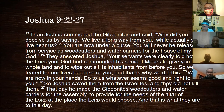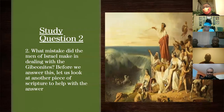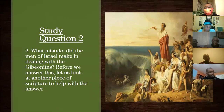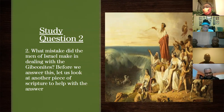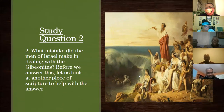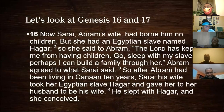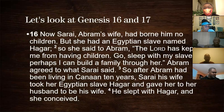This leads us to study question two: what mistake did the men of Israel make in dealing with the Gibeonites? Before we answer this, let's look at another piece of scripture to help — Genesis chapter sixteen, verses sixteen and seventeen.